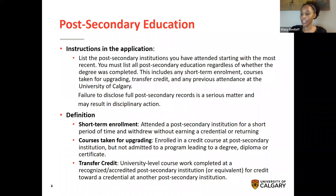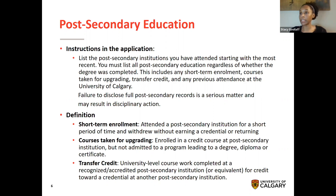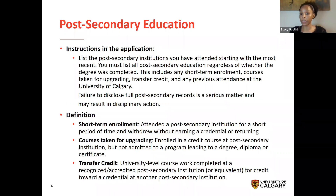The first section I'll be talking about is post-secondary education and the information you find in the application. The instructions state that you must list all post-secondary institutions attended, starting with the most recent. You must list all post-secondary education, regardless of whether the degree was completed. This includes any short-term enrollment, courses taken for upgrading, transfer credit, and any previous attendance at the University of Calgary. Failure to disclose your post-secondary record is a serious matter and may result in disciplinary action.